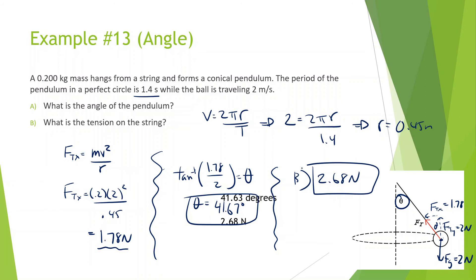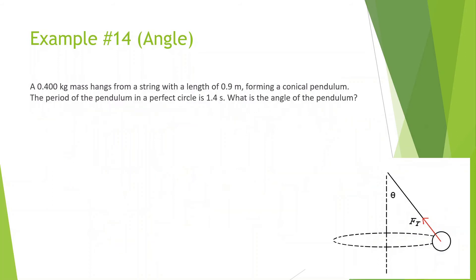I hope all of that made sense. We're going to be doing more, but I hope this is starting to make more sense. A 0.4 kilogram mass hangs from a string with a length of 0.9 meters from a conical pendulum. The period of the pendulum in a perfect circle is 1.4 seconds. What is the angle of the pendulum?